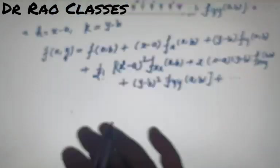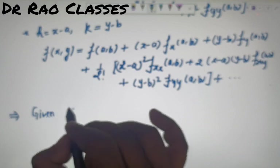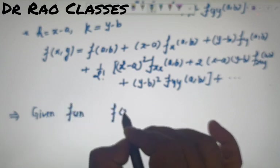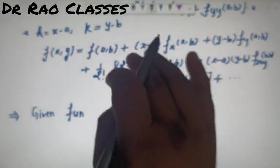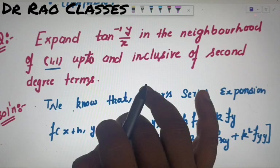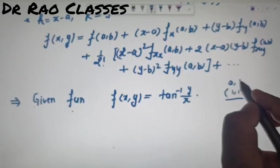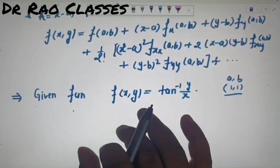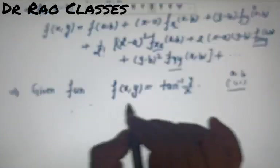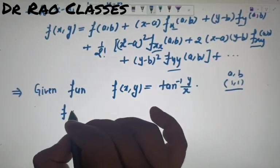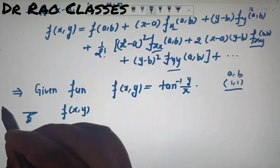अभी हम यहाँ पर काम करने वाले हैं। Given function है f(x,y) = tan⁻¹(y/x)। इसे (1,1) के around expand करना है — a=1, b=1 दे दिया। तो सबसे पहले partial derivatives निकाल लेते हैं: f_x, f_y, f_xx, f_xy, f_yy।